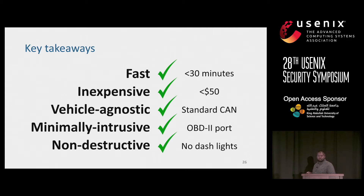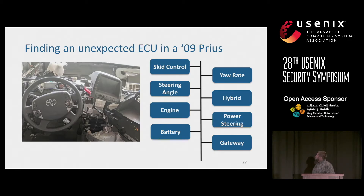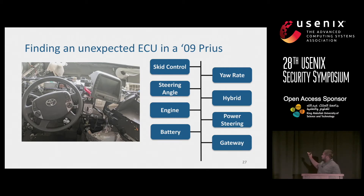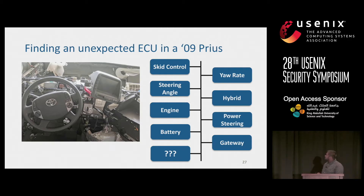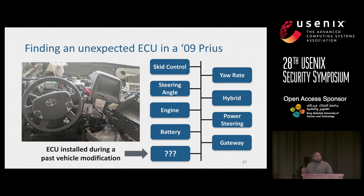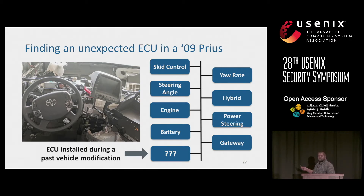Let's look at two interesting case studies. Looking at the source map of the 2009 Prius: the online mechanic subscription indicated we should expect eight ECUs in the car. When we ran our network map, we found a ninth ECU. We looked at the history of this car and found that when the university first bought it, they had converted it to an all-electric car, adding another ECU transmitting onto the network. We verified this by physically going into the car, unplugging ECUs one by one, and confirming there was indeed a ninth device.